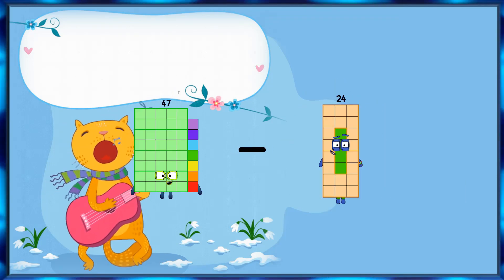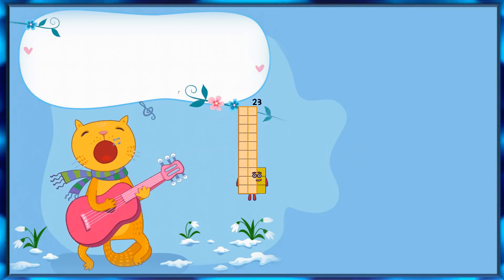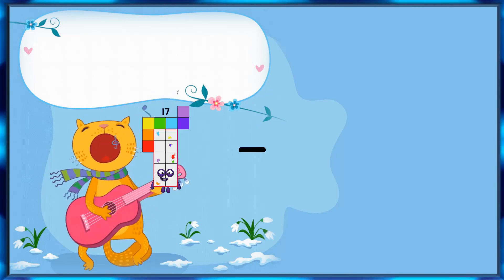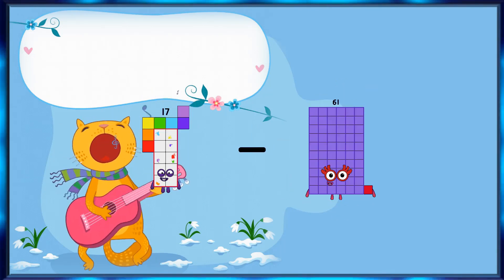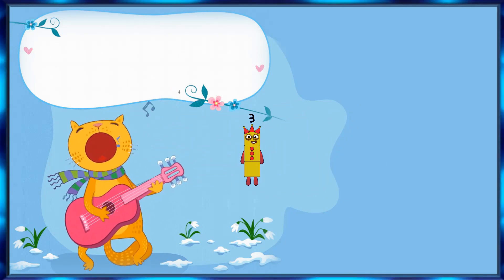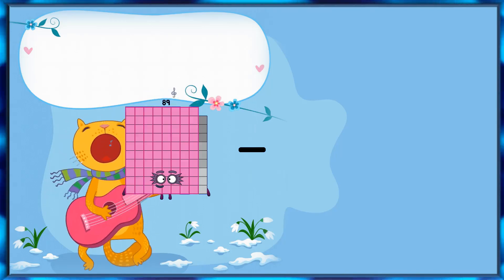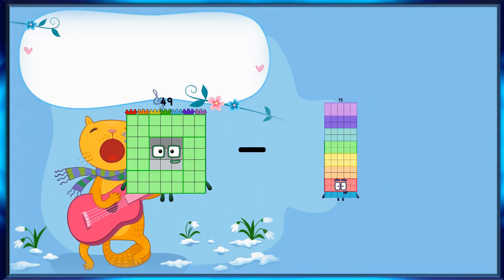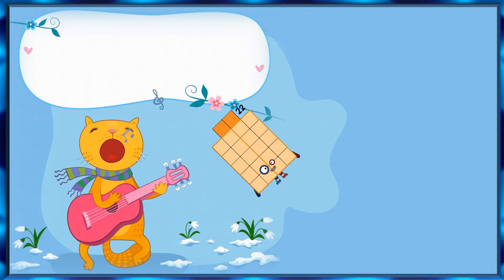47 minus 24 equals 23. 17 minus 14 equals 3. 49 minus 27 equals 22.